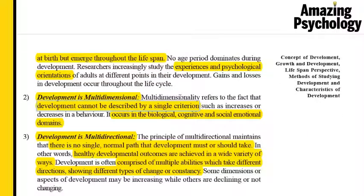The second point is that development is multi-dimensional, meaning there are many dimensions to it. Development cannot be described by just one single criterion. The author is talking about biological, cognitive, social, emotional, and psychological criteria — all of these are domains within development. Individually they cannot completely describe how development occurs, but together they give a good view, which is why it's called multi-dimensional.